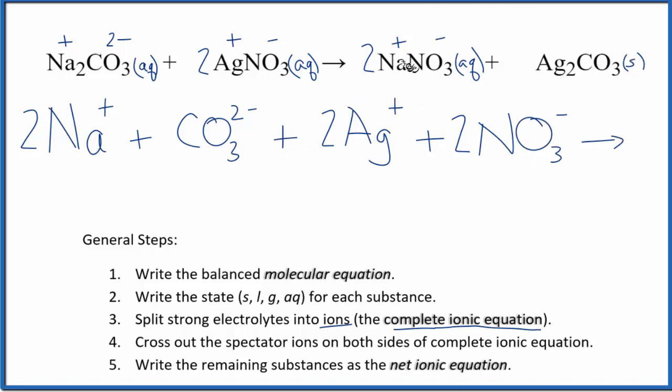For the products, we have Na plus. And again, we have two of those. Plus the nitrate. NO3 minus. Again, the 2 goes to everything. So we have two of those. And then we said the silver carbonate, Ag2CO3. Since that's a solid, we're not going to split that apart into its ions. We don't do that in net ionic equations. So this is the total or complete ionic equation.